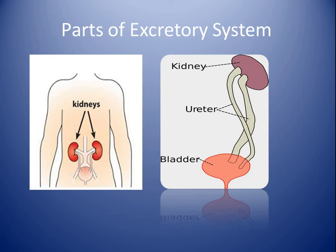To recap: the parts of the excretory system are kidneys, ureter, urinary bladder, and urethra. Urine is formed in the kidney. The ureter carries urine from the kidney to the urinary bladder. The urethra helps to pass urine out of the body. We discussed the circulatory system and excretory system — all the organ systems in our body work together so that our body can function normally and properly. I hope you all have understood. Take care, children. God bless you all.